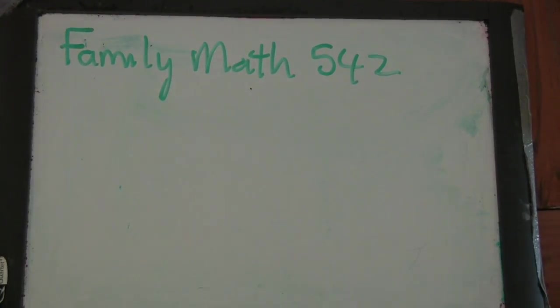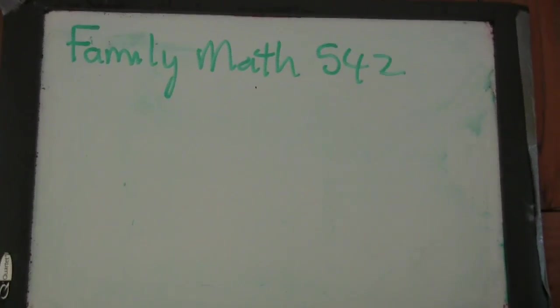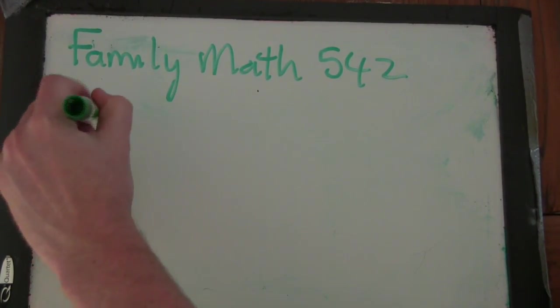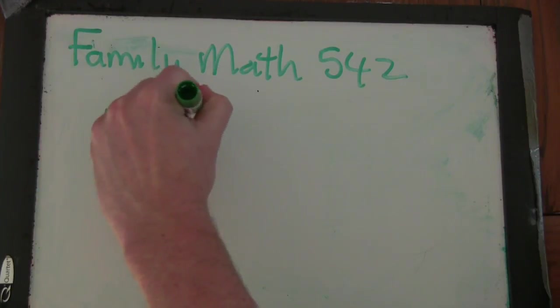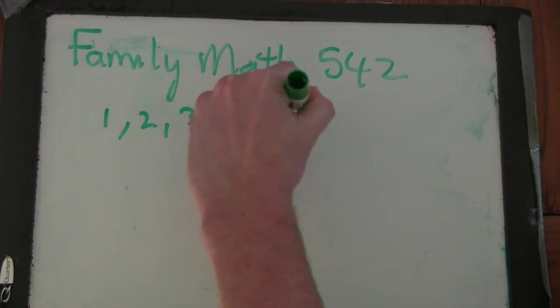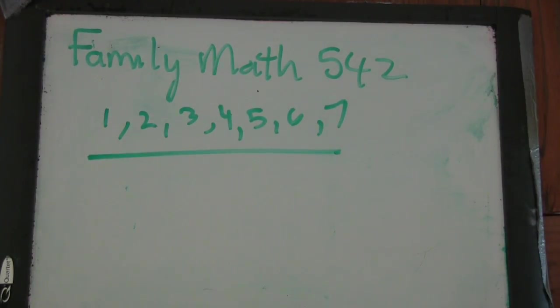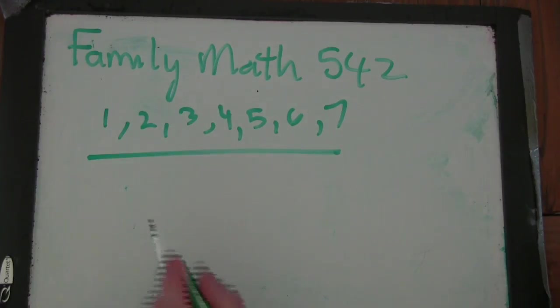Okay, good evening. Welcome to Math 542. So you have a homework problem from your IDEA Math class that's really cool. You take the digits 1, 2, 3, 4, 5, 6, 7, and you're trying to make 7-digit numbers. And the rule on the 7-digit numbers is no two consecutive digits can have a common divisor other than one. Okay, so they have to be relatively prime.